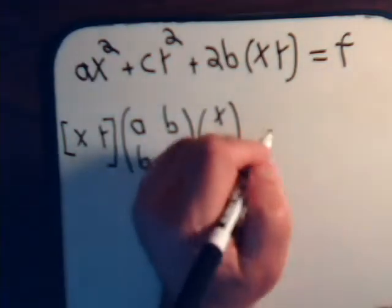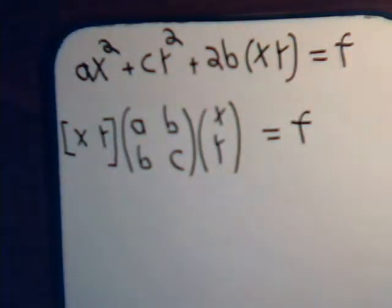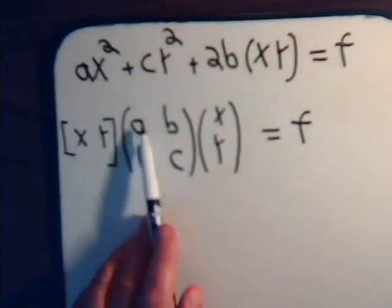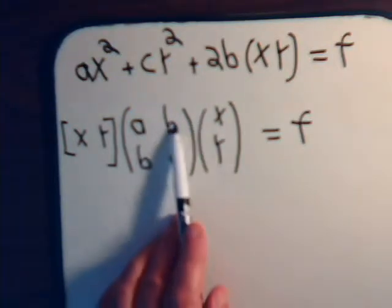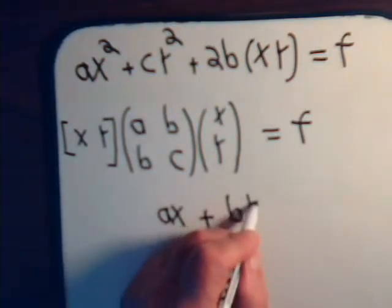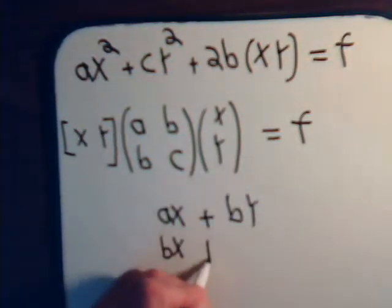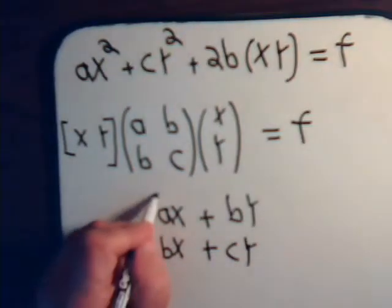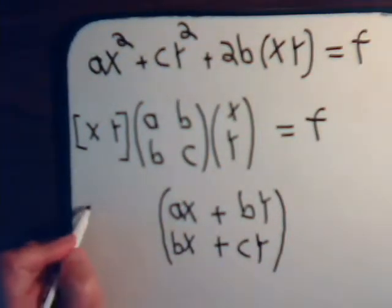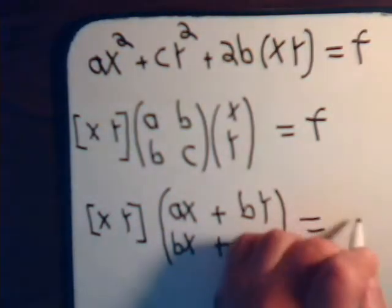It's not at all obvious. So this equals f. Now, let's multiply these two out. This would be Ax plus By, so we have Ax plus By. Then we have Bx plus Cy. And this is multiplied by the row vector xy, and we say that will equal f.